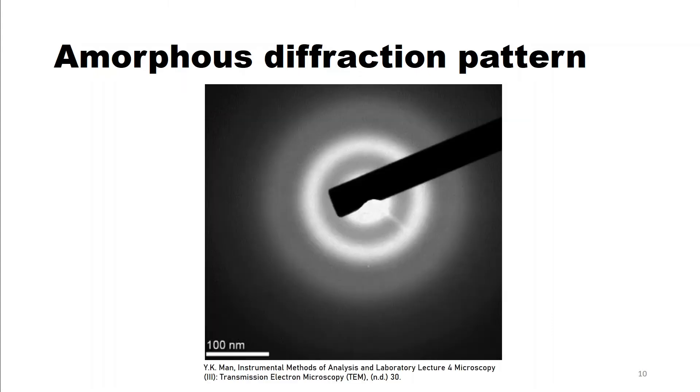You can think about amorphous materials like a polycrystalline material with infinitesimally small crystals, if that makes sense to you. That's why the diffraction pattern of amorphous materials looks a bit like a blurred polycrystalline diffraction pattern.